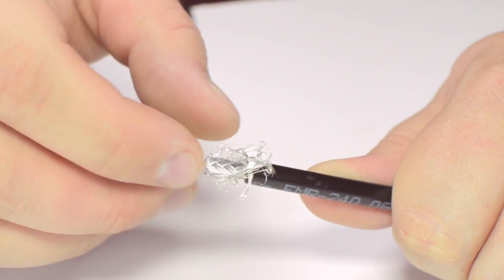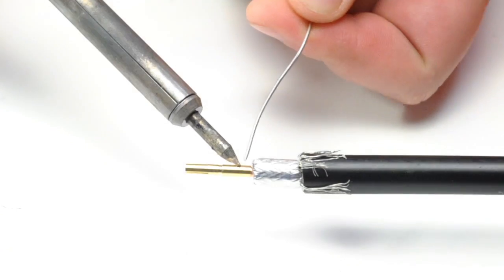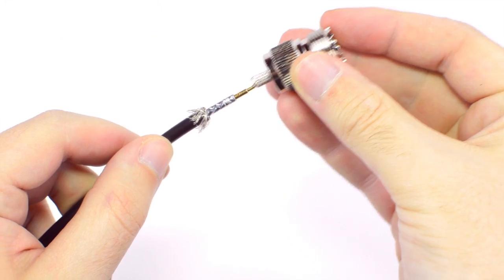Pull back the braided shield and insert the pin onto the center conductor. Solder the pin onto the center conductor and insert the connector housing over the cable.